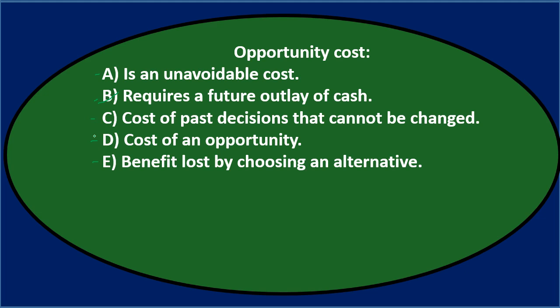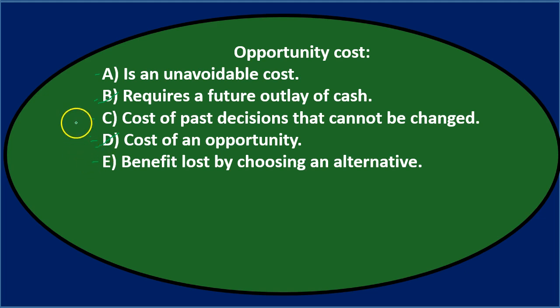Within the reading, even if we don't know the definitions, we might recognize a definition we've heard. Option D says cost of an opportunity — this sounds like it's just repeating back the term 'opportunity cost,' so it doesn't sound quite right. I'll cross out D. Option E says benefit lost by choosing an alternative — I'll keep that one, as it sounds relevant and familiar.